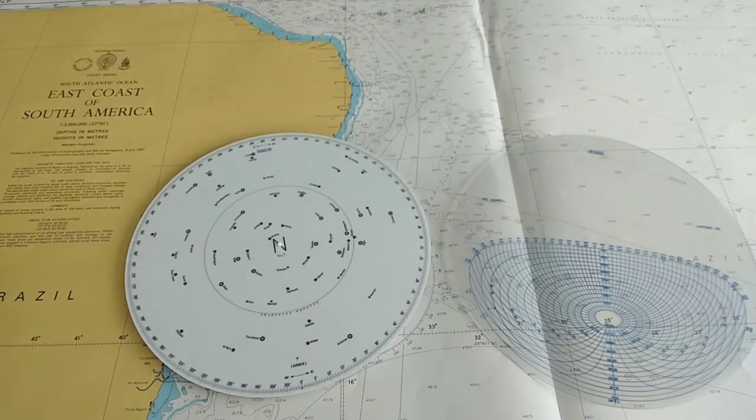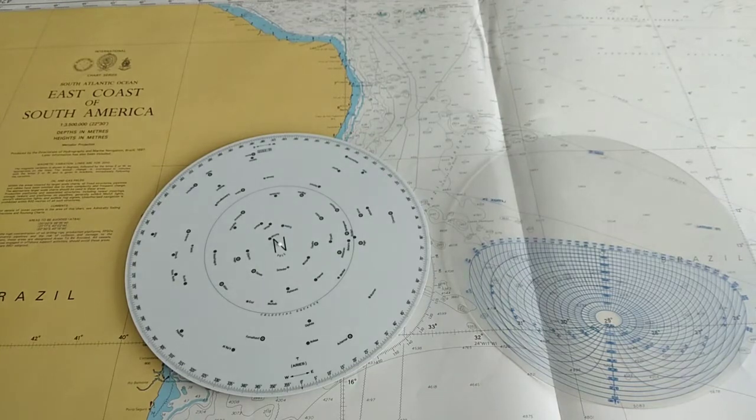Finding a star is very easy. First you have to do a small calculation. First you have to determine the GH Aries by using a nautical almanac, or you can use some other form of software to find the GH Aries.